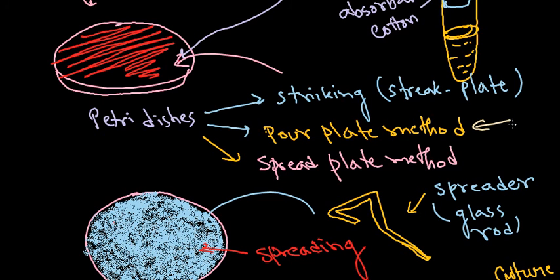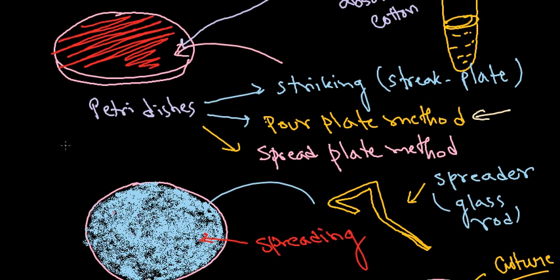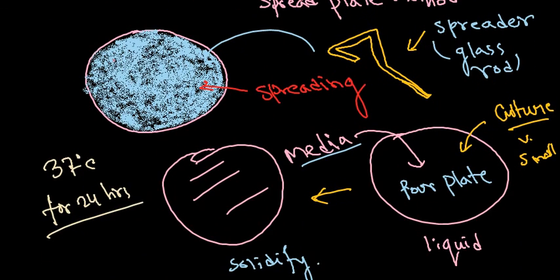After incubation, take out the plate from the incubator and observe the growth pattern. For the streak plate, you'll see bacterial growth following the exact streaking path — the pattern you streaked will be visible. The plates look really nice. Never touch them with your hands and never open the petri dish lid after incubation, regardless of whether the bacteria are pathogenic or non-pathogenic — always observe from outside. For the spread plate, you'll see a whole whitish layer throughout the plate, called a lawn of bacteria.